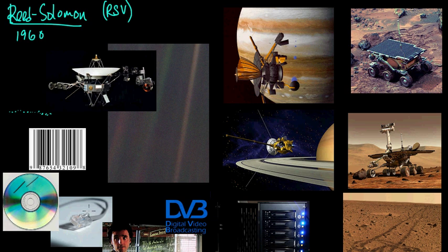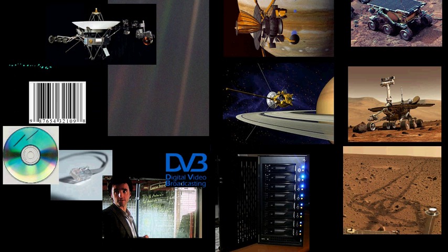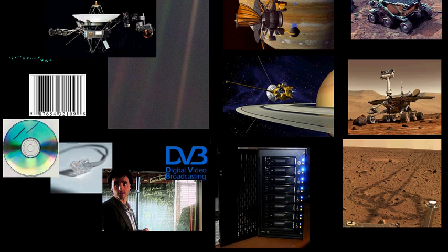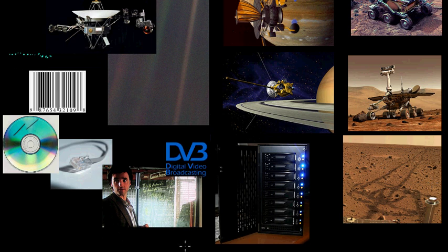Another application is DSL: if you get internet over telephone lines, DSL uses Reed-Solomon codes. For several years, digital TV also used Reed-Solomon codes as part of the DVB standards. More recently, newer versions of digital video broadcasting standards are starting to use more modern codes. Reed-Solomon is also used in RAID 6, where redundant disks protect your data if bad things happen.